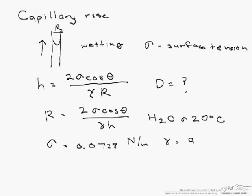Our specific weight is 9.789 kilonewtons per meter cubed. The angle between the fluid and the tube is 0, and the cosine of that angle is 1.